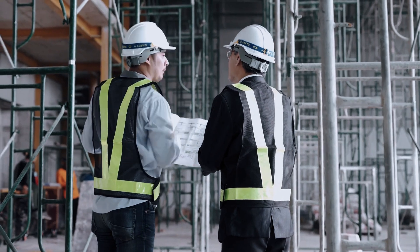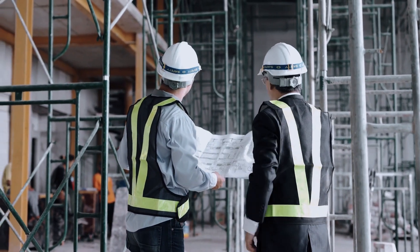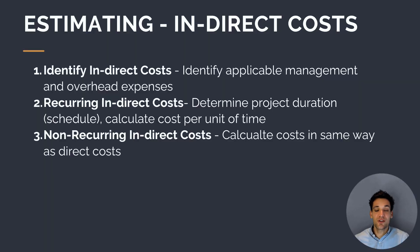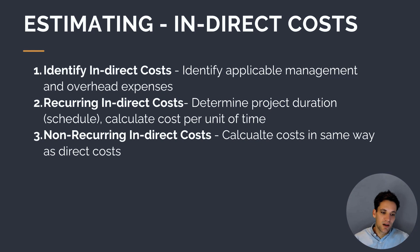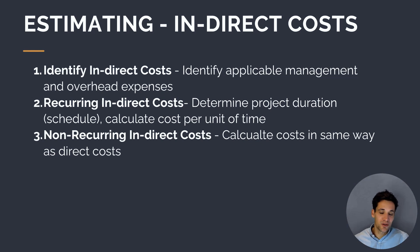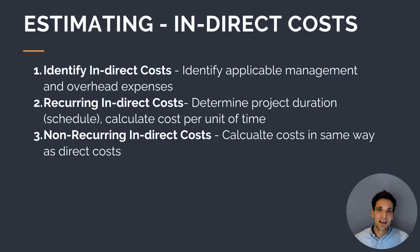After calculating our direct costs — the costs of all physical construction activities — we move on to calculating our indirect costs, the costs to supervise and manage the works. We first identify all applicable management, supervision, and overhead costs. We then calculate our recurring indirect costs: based on the duration of the project, what are the ongoing costs we need to incur? These include staff salaries, temporary fencing, a security guard at night, or hiring a forklift for offloading materials. We also calculate our non-recurring indirect costs — the one-off costs like setting up site facilities — in a similar way to how we calculate our direct costs.